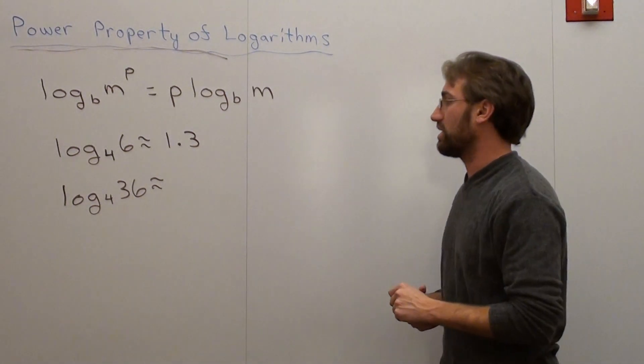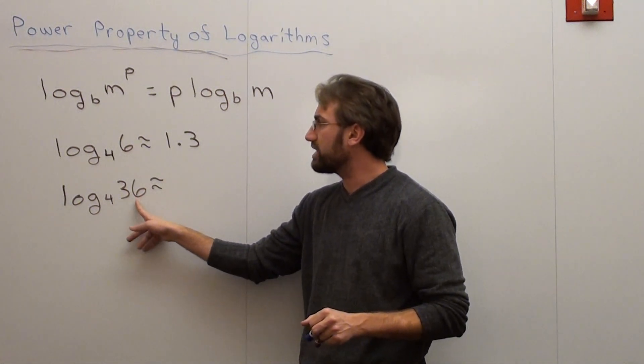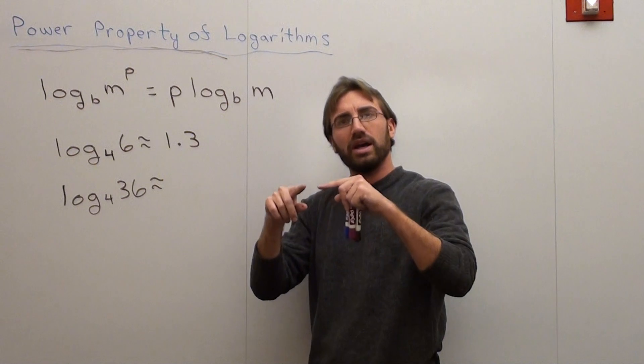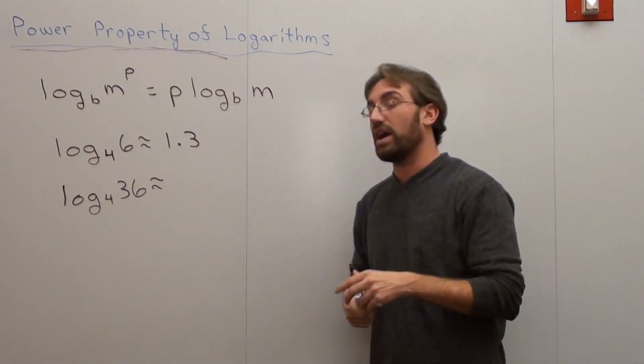Well, we're going to figure that out. Now some people are going to say, oh, I know. I can make the 36 a 6 times 6, and then use the product property, and add them up. And yeah, you can,